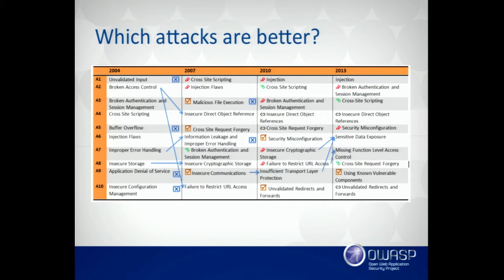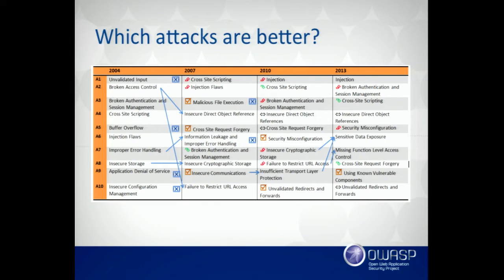Even in AppSec, we've had these battles over which style of attacks are more important. The OWASP Top 10 has evolved over the years—you can see things moving around. Cross-site scripting was number four on the first Top 10, then went to number one, came down to number two, and now it's number three. Our understanding of these attacks and what matters has evolved. This was still within a fairly flat application model—from the late '90s until just a few years ago, apps were pretty flat, straightforward, and simple.